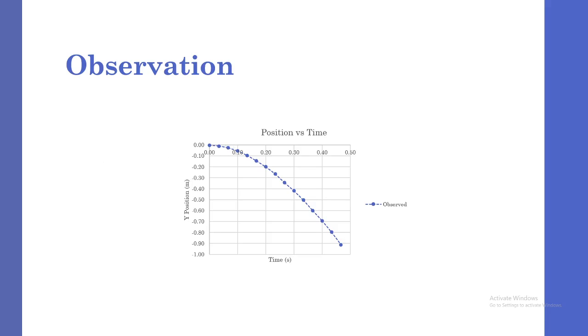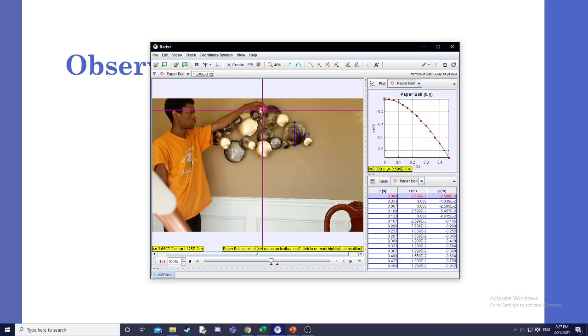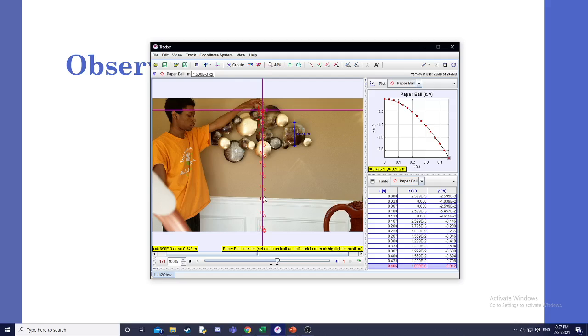For my observations, I used the app Tracker to record the falling of a paper ball. I set the coordinate axes so that the motion is in the negative y direction, and I shot the video at a consistent 30 frames per second.